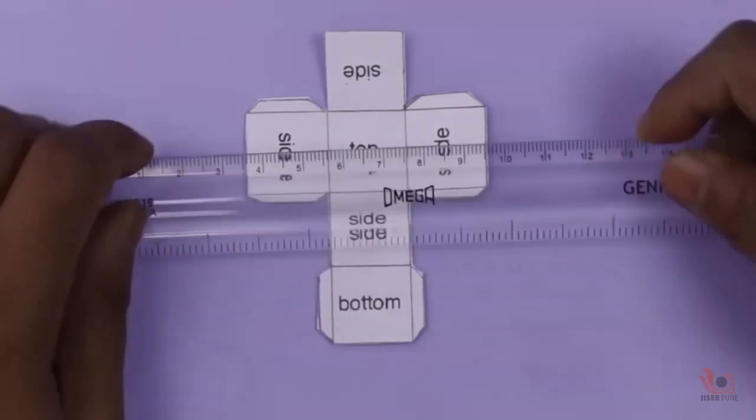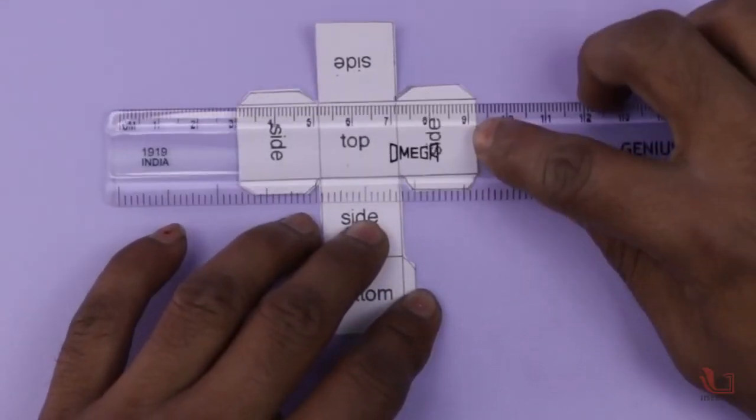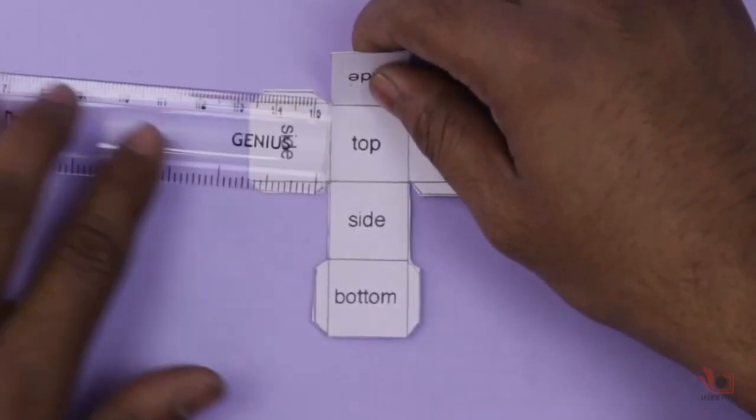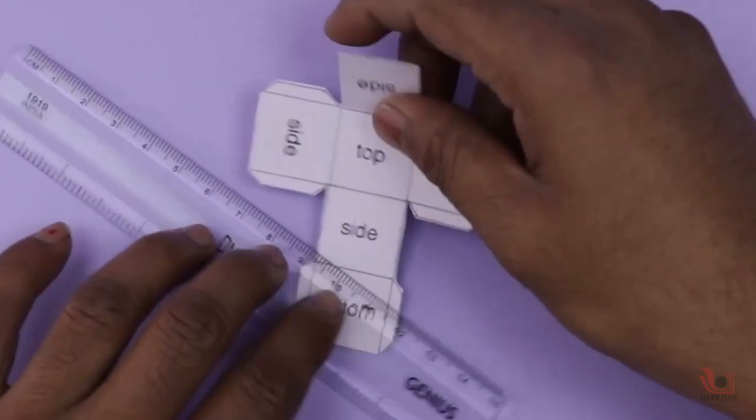With the help of a scale, gently fold the edges of the net inward. For reference, top, side and bottom faces are given.